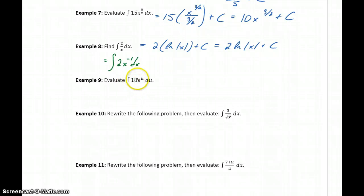To integrate 18 e to the u du, 18 is again just a constant multiple, so all we have to look at integrating is just e to the u, and that integral is e to the u, and then we tack on that constant plus c. So our result is 18 e to the u, plus c.